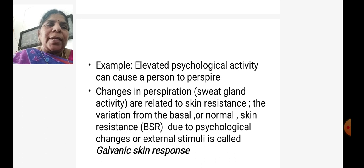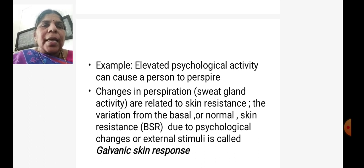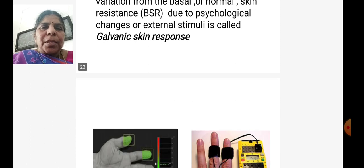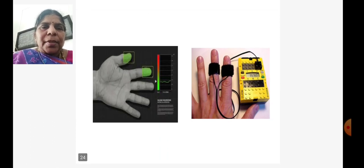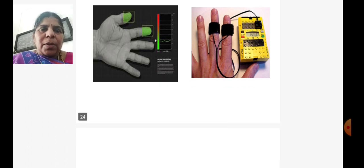For example, when you are subjected to elevated physiological activity, it can cause a person to perspire. Similarly, changes in perspiration, that is sweat gland activity, are related to skin resistance. The variation from the basal or normal skin resistance due to psychological changes from external stimuli is called galvanic skin response. You can see the diagram showing how you can measure the galvanic skin resistance from your fingers.